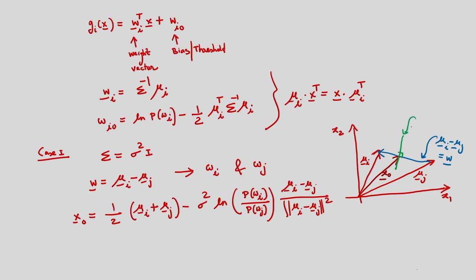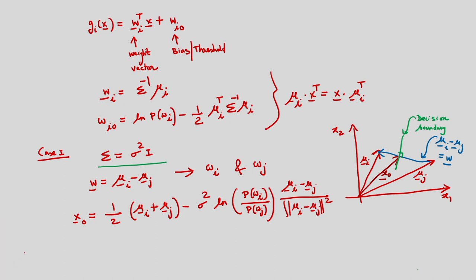The decision boundary must be orthogonal to the weight vector and pass through the point x_naught. This decision boundary is orthogonal to the weight vector — which is the difference between the two means mu_i and mu_j — and passes through x_naught. This is true for the case of a diagonal covariance matrix, same for all classes.